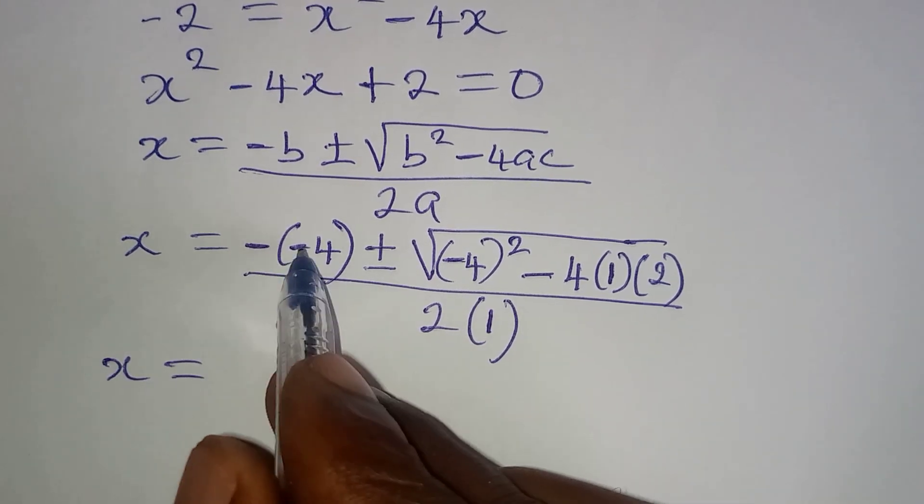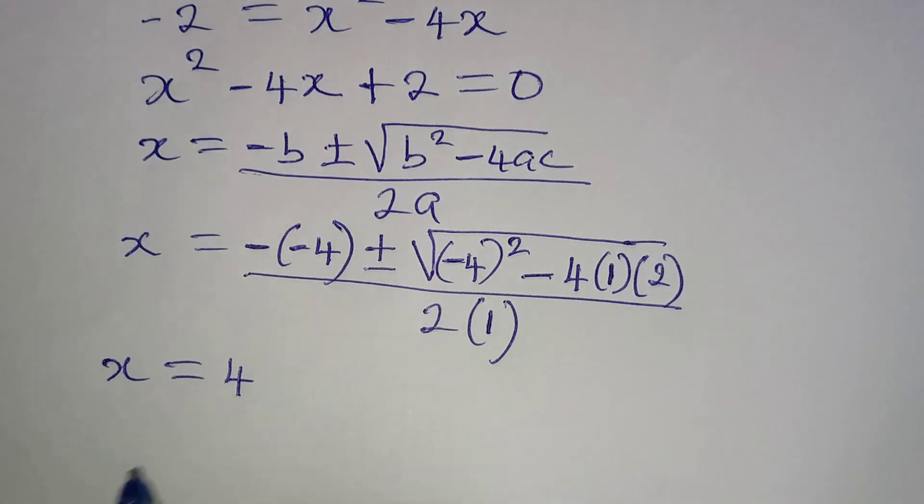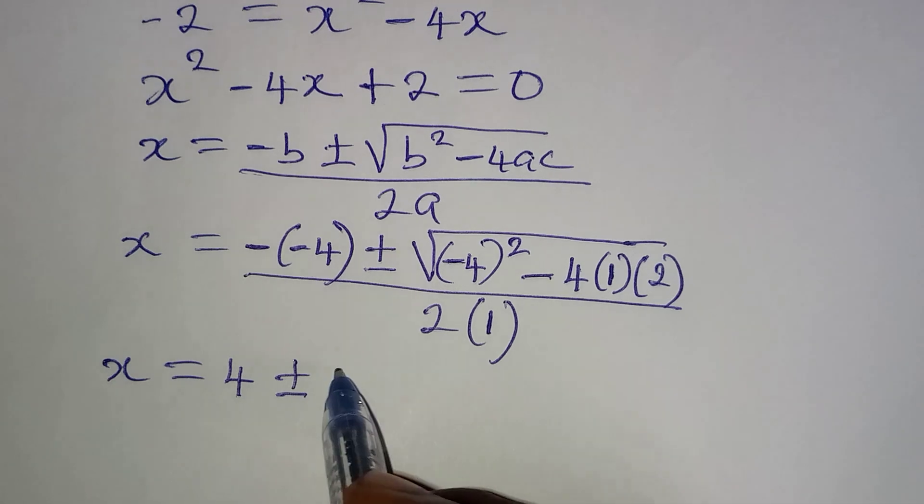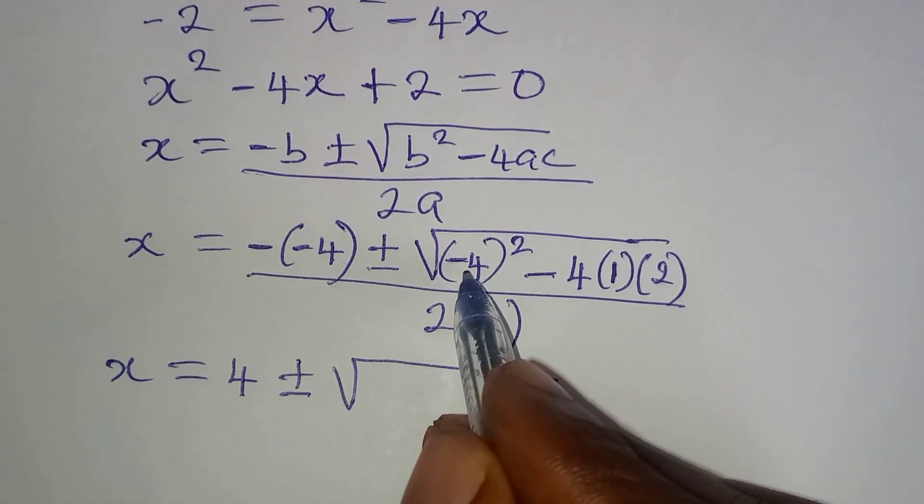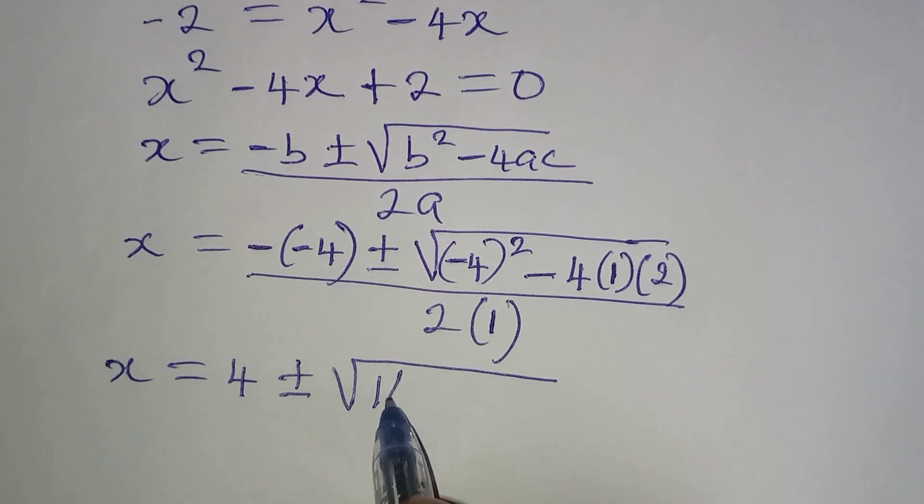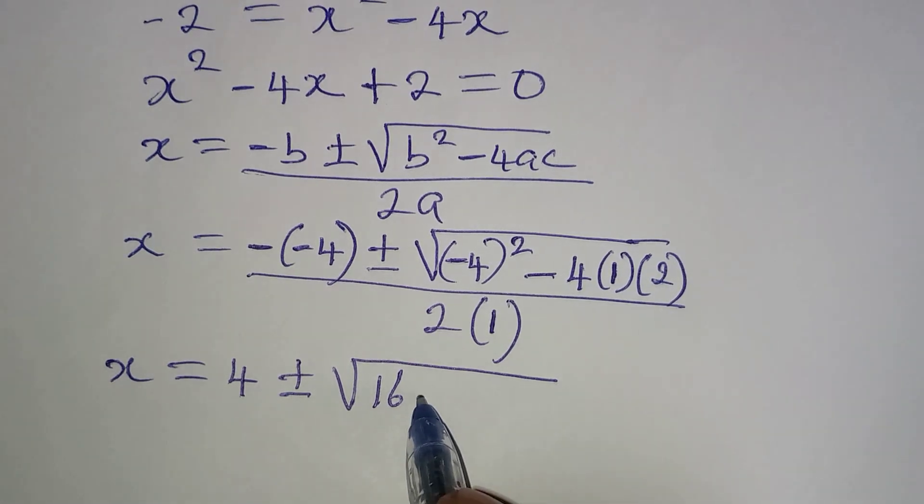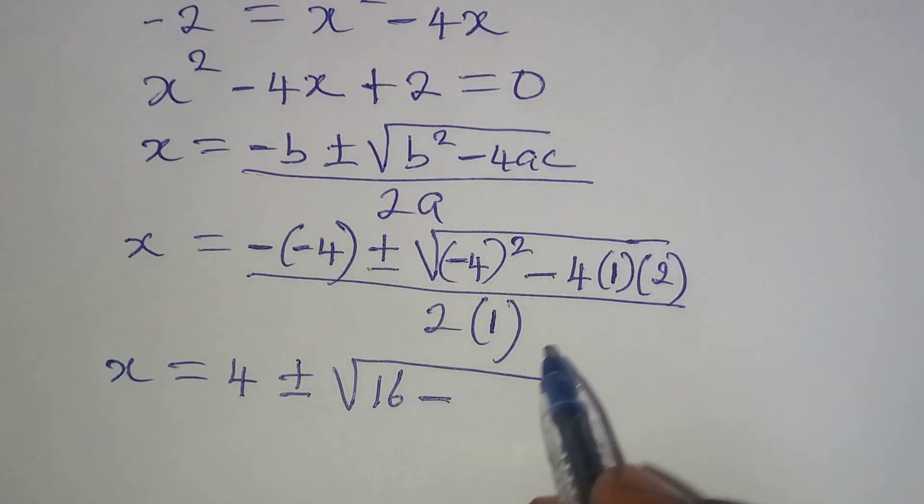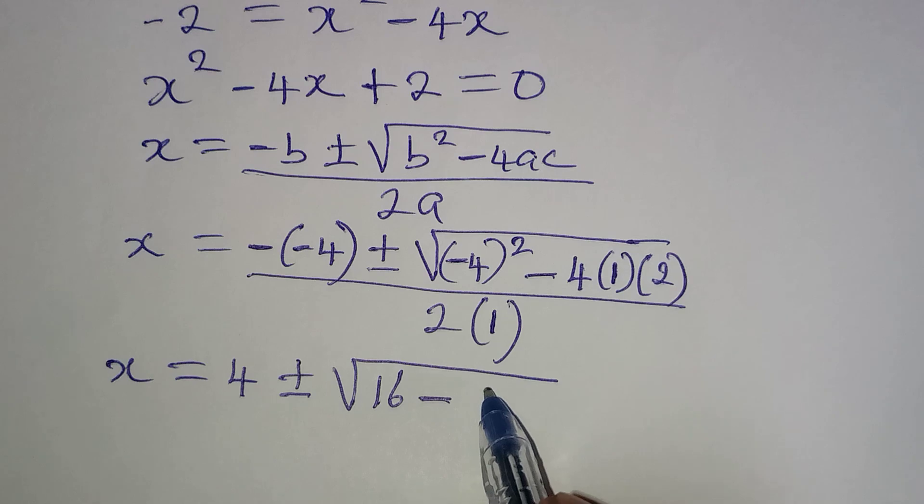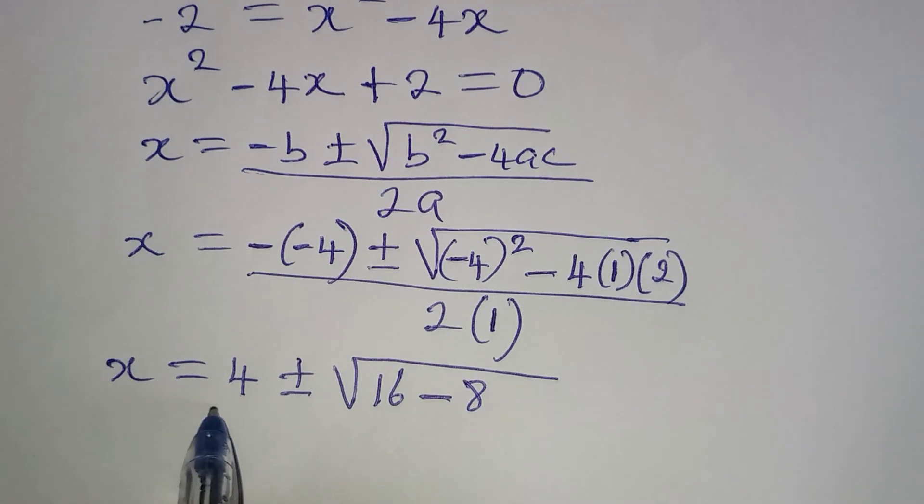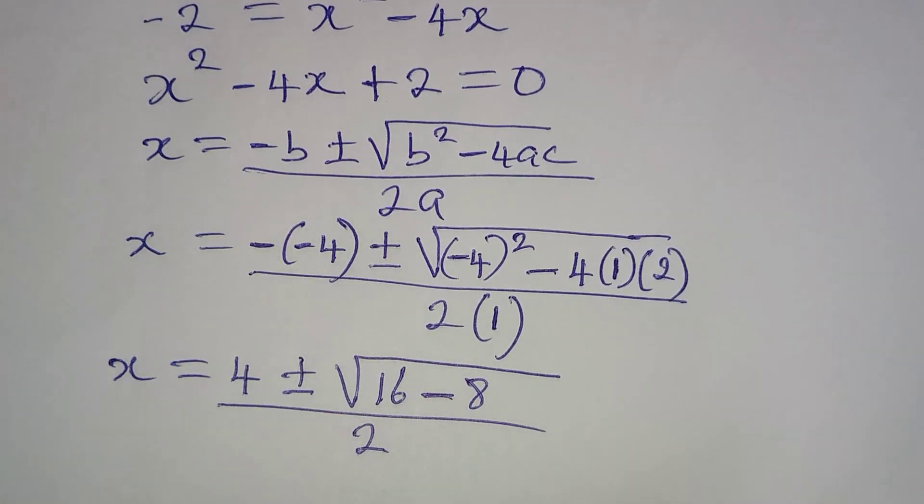Now what do I do from here? x will be equal to... Negative negative will give us plus 4. Then plus or minus square root of minus 4 squared will give us 16, because negative negative will be positive. Then minus 4 times 2 will give us 8. Then the whole of this is over 2.